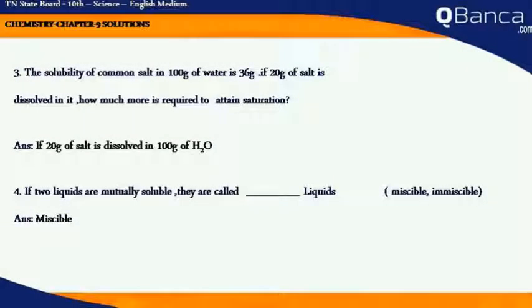The solubility of common salt in 100 grams of water is 36 grams. If 20 grams of salt is dissolved in it, how much more is required to attain saturation? If 20 grams of salt is dissolved in 100 grams of water, another 16 grams of salt is needed to attain saturation, because the total solubility of common salt in 100 grams of water is 36 grams.